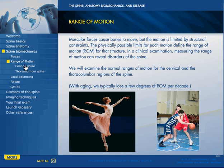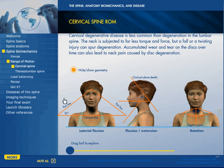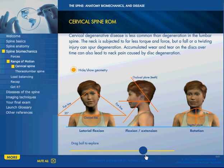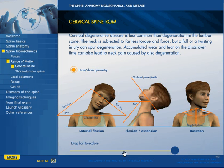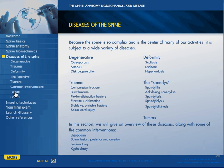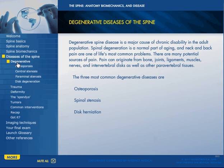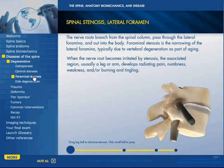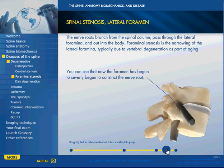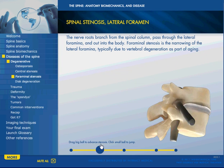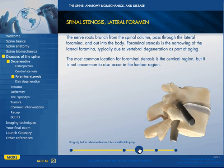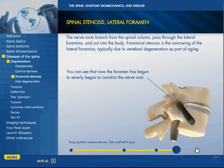Range of motion — the cervical spine — again including animation. If we jump to diseases of the spine, we can look at degenerative diseases: osteoporosis, central stenosis, foraminal stenosis. Picking one of those, we can see what happens to the spine where the foramen gets closed — that's foraminal stenosis.